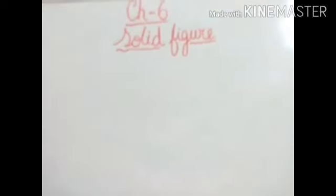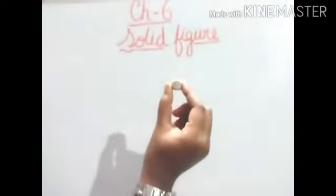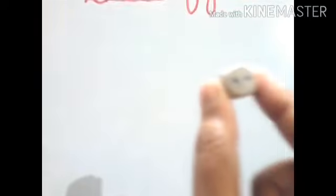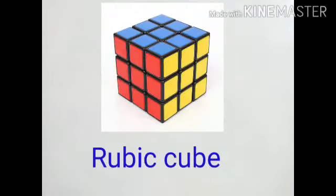Now, for cube, have you seen the dice? It's all sides are equal. Can you see it? And one more is Rubik's cube. Okay, that one also cube shape. So let us draw the cube.